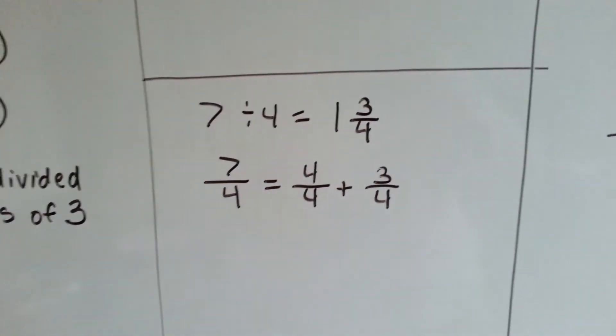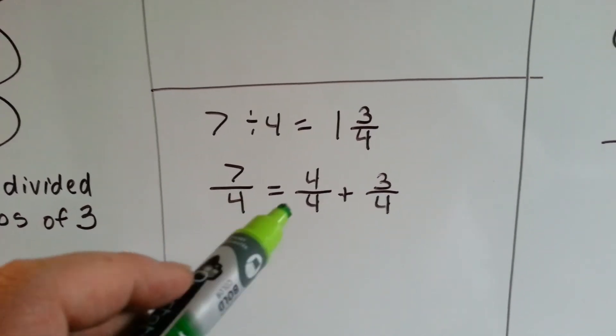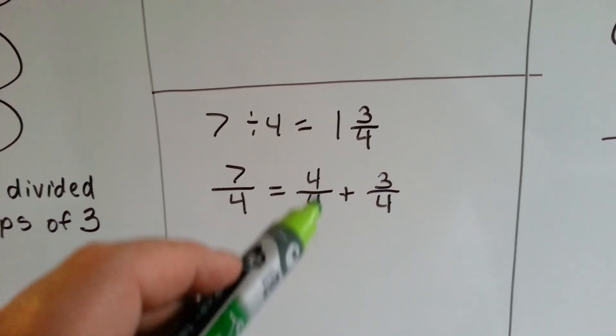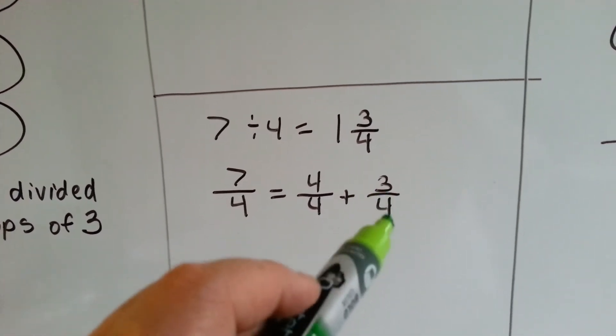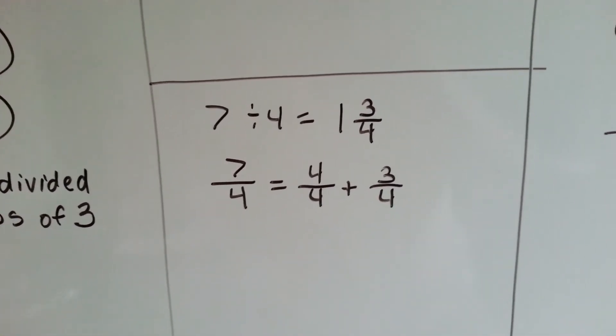When we have seven divided by four, it's the same thing as seven over four, seven fourths. We can pull four fourths out of it and that'll leave three fourths left. So it's one and three fourths. Look how fast we're going.